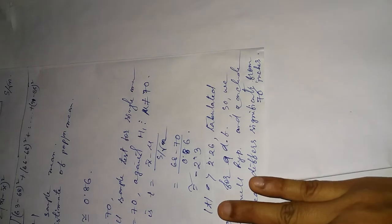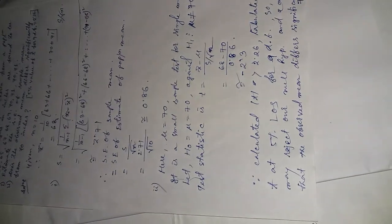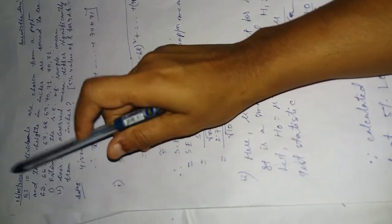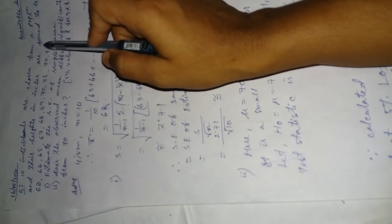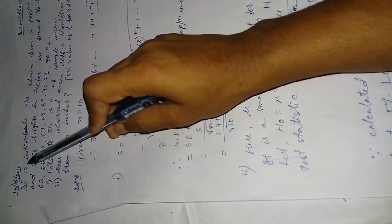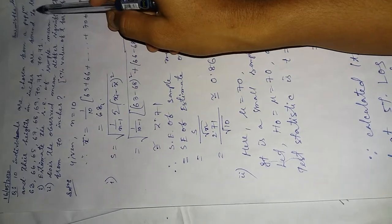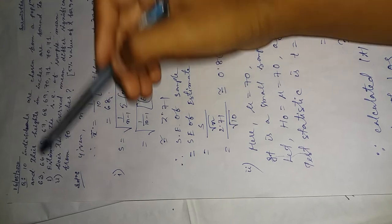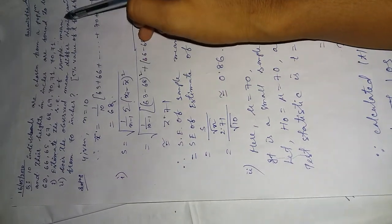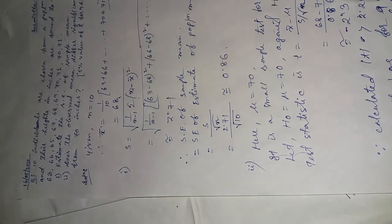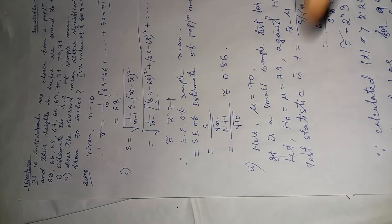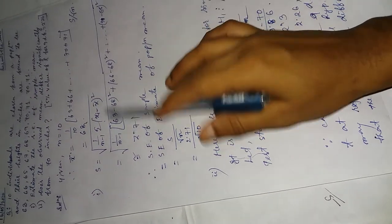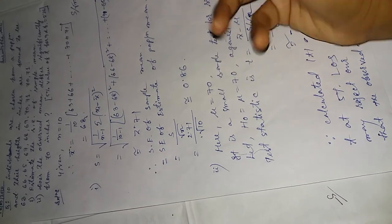So we completed two sums. First, we chose ten individuals from a population, that means small n is 10. Ten observations were given. We calculated x bar, then the question asked to estimate the standard error of sample mean and estimate of population mean. After calculation, we got the estimate. Then in the second part, we tested whether the observed mean differs significantly, and we concluded our test.